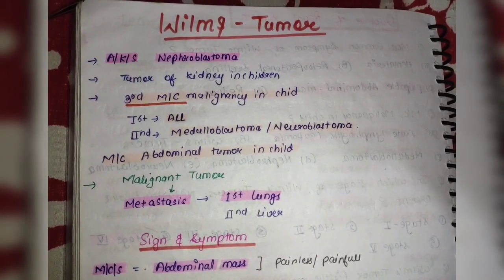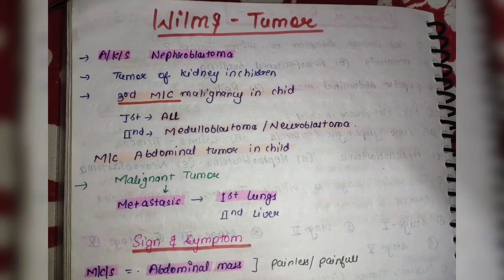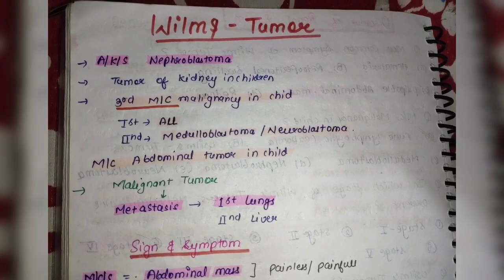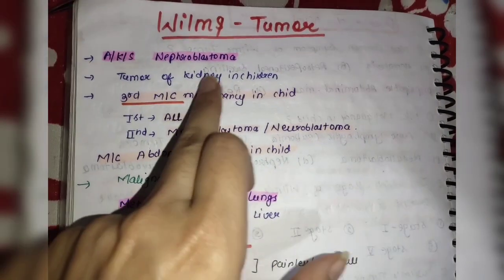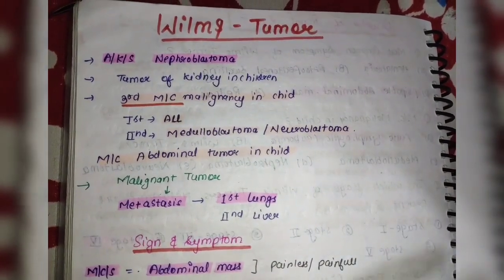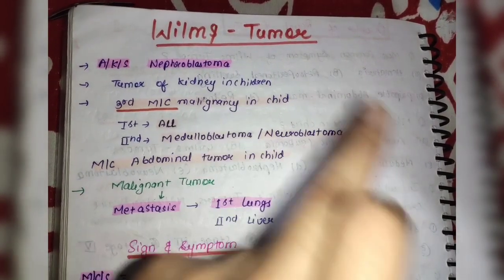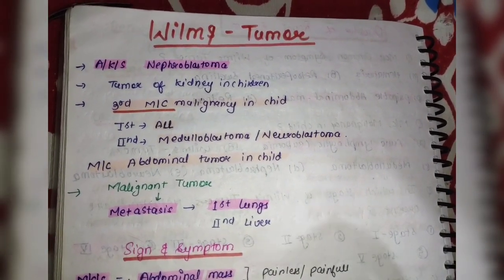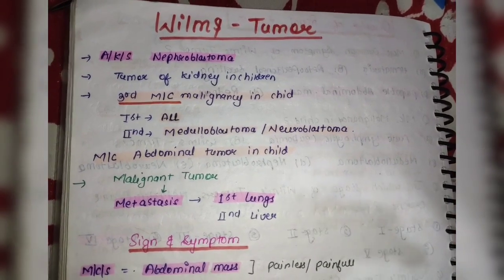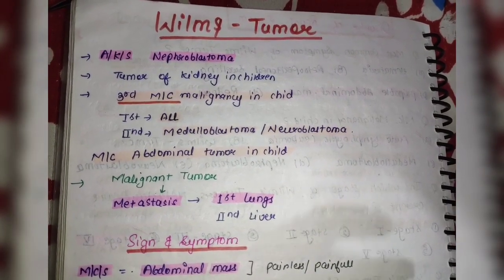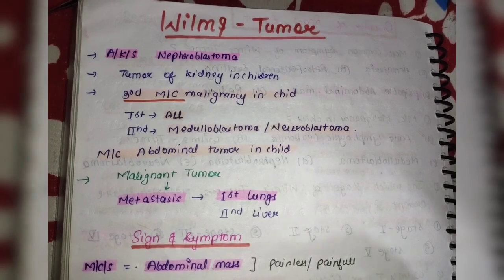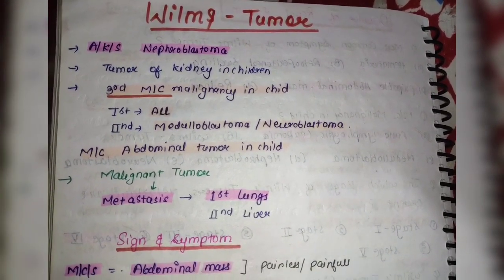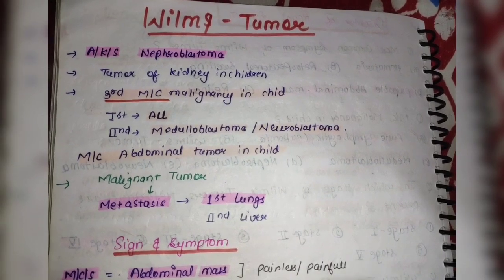Wilms tumor is most commonly used in pediatrics. It is also known as nephroblastoma. Wilms tumor को nephroblastoma भी कहते हैं, means tumor of kidney in children. ये kidney का tumor होता है children के अंदर, जब kidney के अंदर children में abnormal cells की growth होने लगती है, abnormal division होने लगती है, तो उसको कहते हैं Wilms tumor, जिसको कहते हैं nephroblastoma.